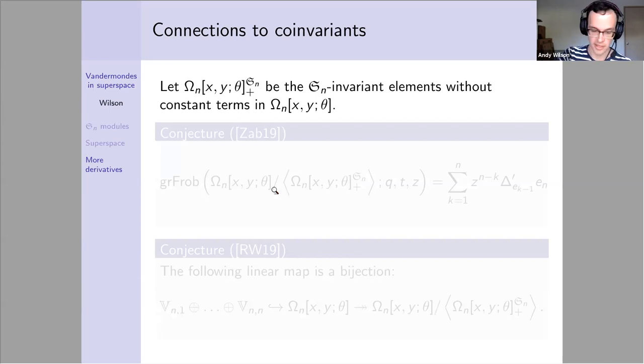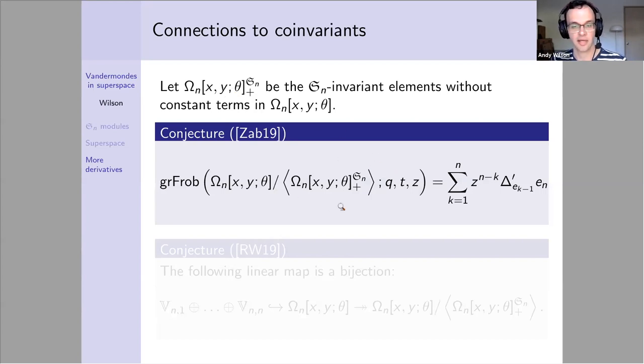This is the co-invariant side of the coin. If you start with the same two sets of bosonic and one set of fermionic variables and look at the S_n-invariant elements with no constant terms, you can quotient out by the ideal they generate and get co-invariants of this space. Zabrocki conjectured that when you look at the tri-graded Frobenius series, because we have three types of variables—x, y, and theta—if you look at any coefficient of a z term, you get a nice delta operator expression.